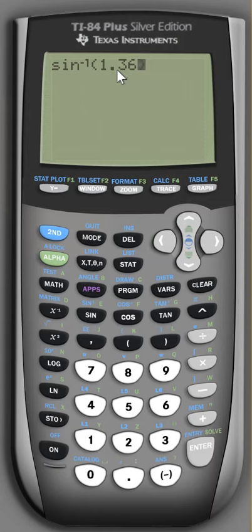Inverse trig function, you're trying to input a ratio and output an angle. So you're saying, what angle has a sine of 1.36?